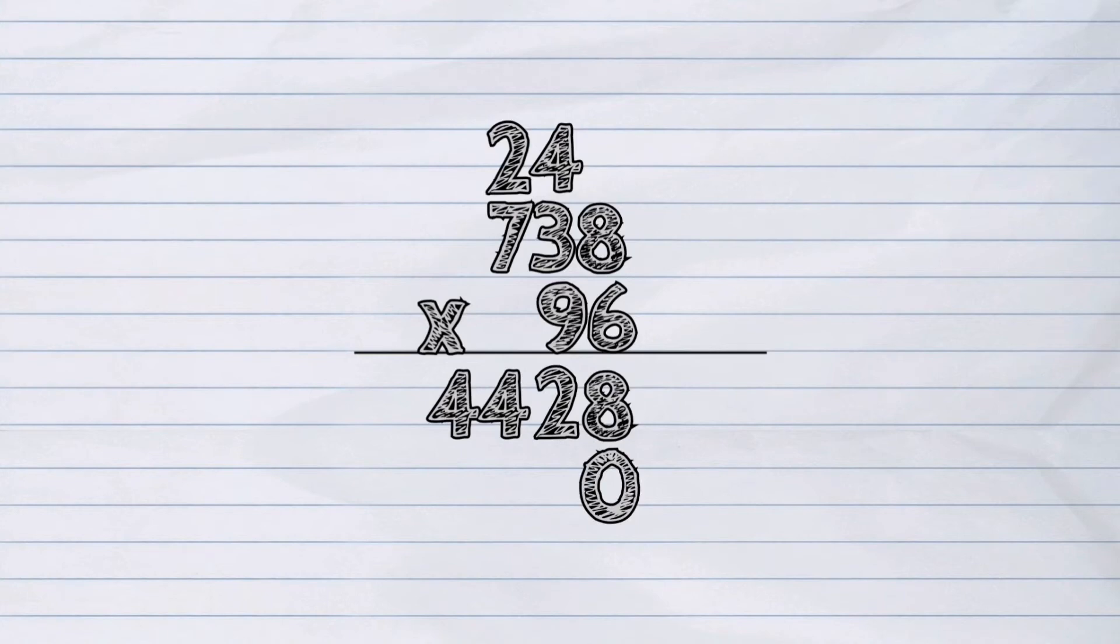Now, let's start multiplying. 9 times 8 is 72. So, we put 2 in the tens place column and carry 7 above the tens place of the multiplicand.